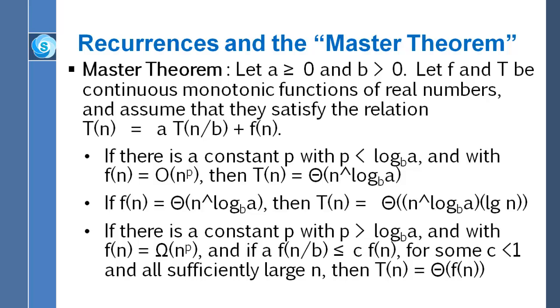Master Theorem says, suppose you've got a non-negative real number a, and you have a positive real number b, and suppose you have two functions f and t that are continuous and monotonic. What is monotonic? Well that means either increasing or decreasing. Most of the time we're thinking increasing, but at least little f can sometimes be decreasing.